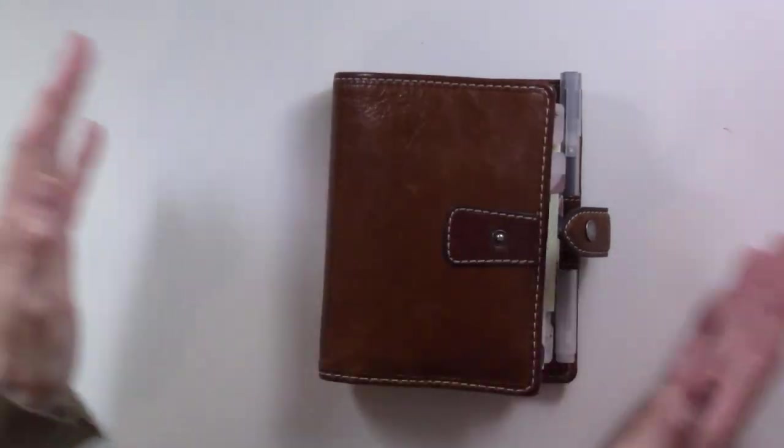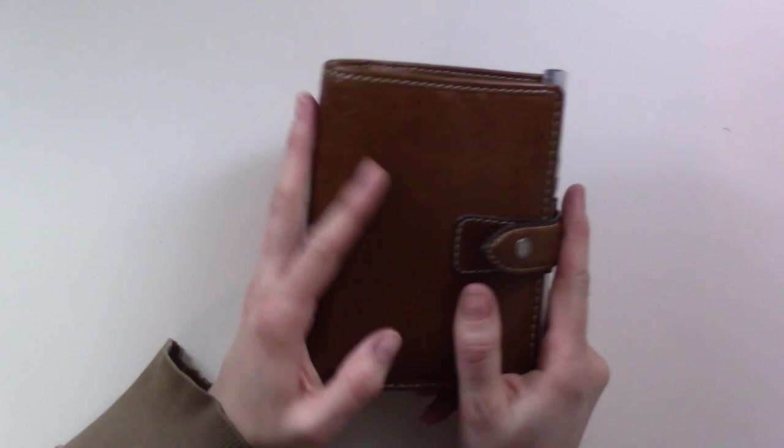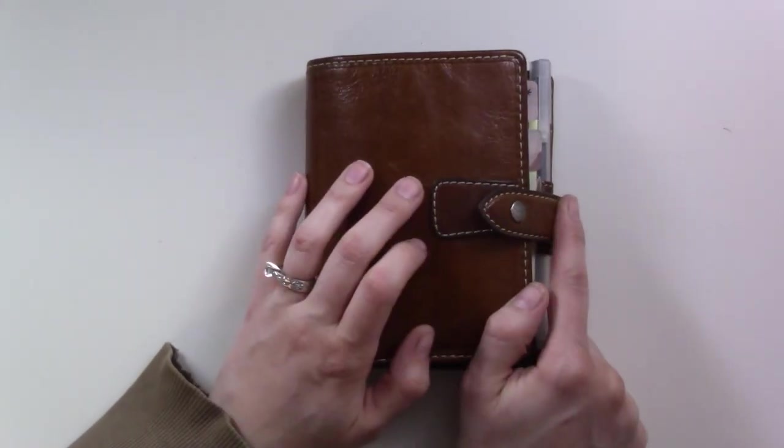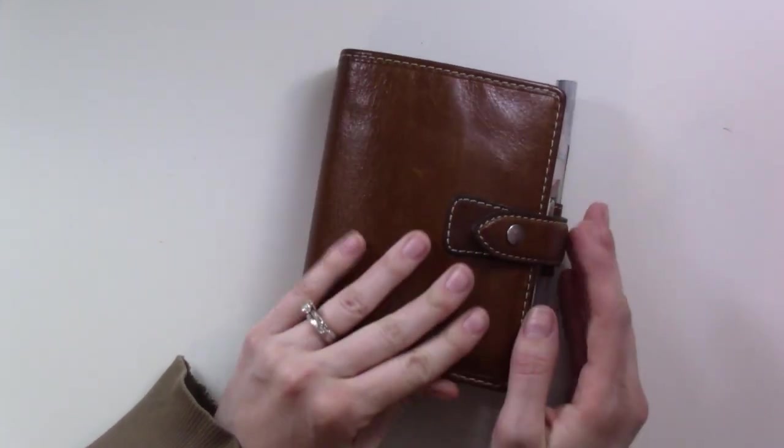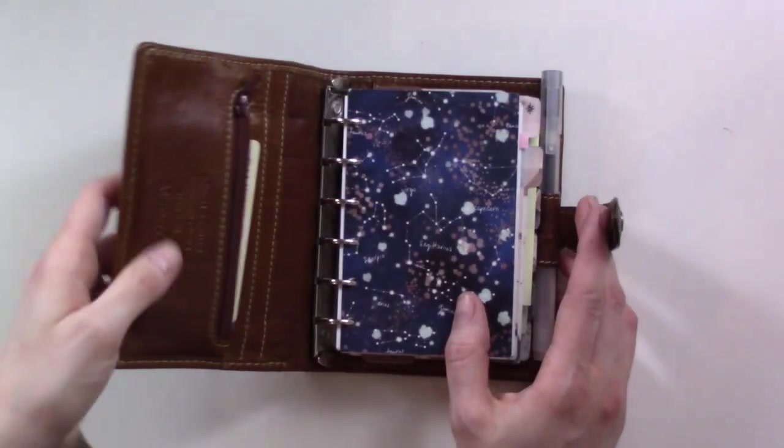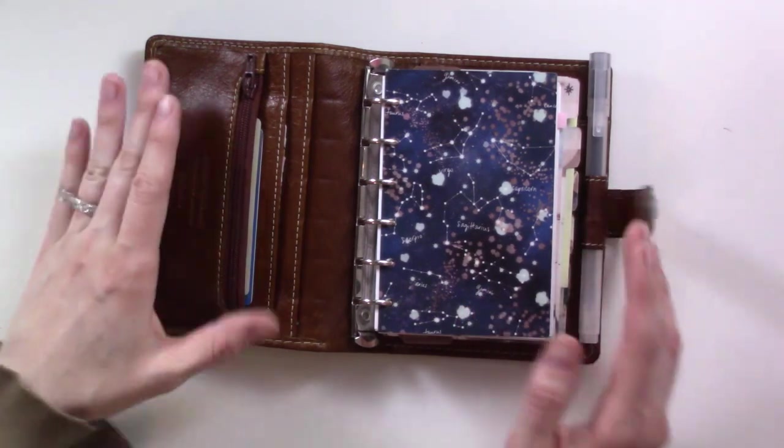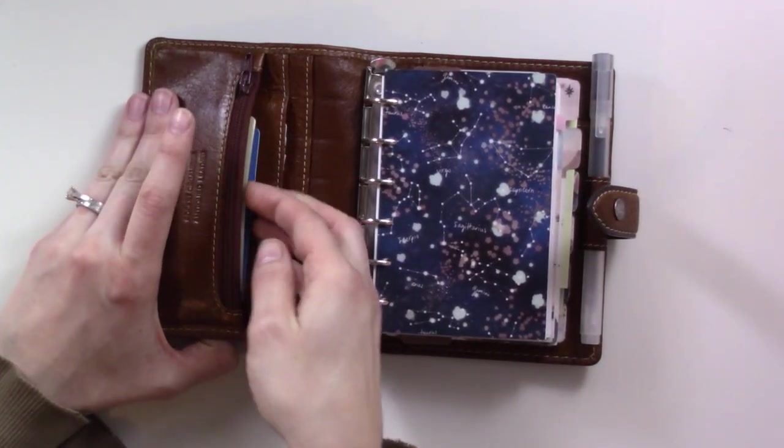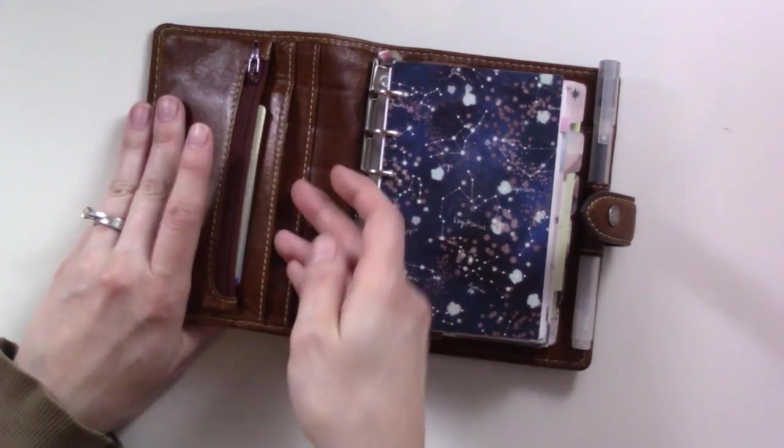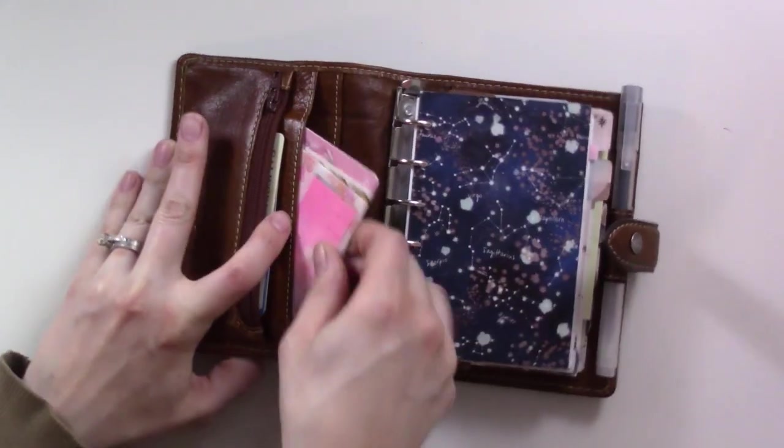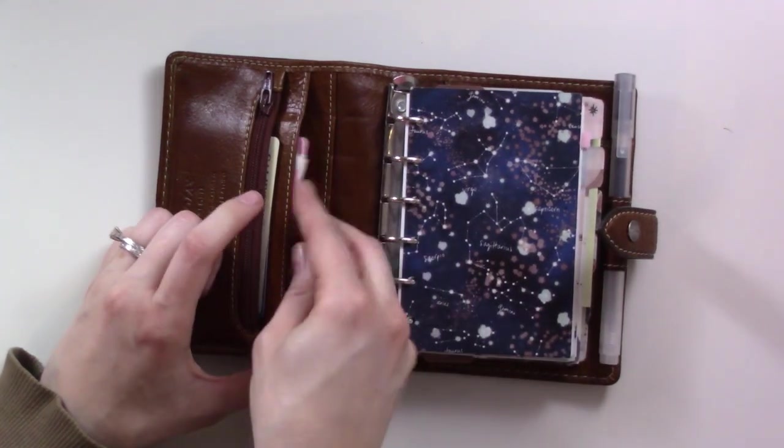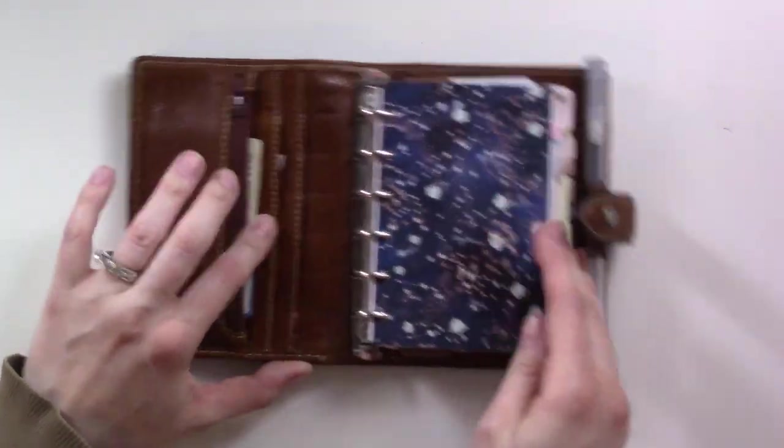This is my trusty Filofax Malden, pocket size in the color ochre. I love this thing, it just makes me so happy to hold and use. It is also my wallet, so in the front I carry my driver's license, my favorite credit card, my health insurance card. This pocket has page flags and the little card that I use to cut washi tape, and then I've got a couple gift cards in the back.